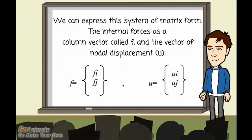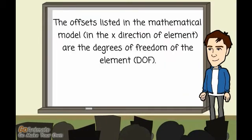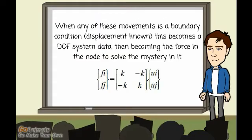We can express the system in a matricial form. The internal forces as a column vector called F and the vector of nodal displacement colon U. The offsets listed in the mathematical model are the degrees of freedom of the element. When any of these movements is a boundary condition, this becomes a DoF system data, then becoming the force in the node to solve the mystery in it.